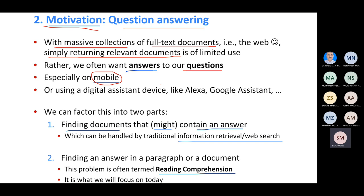This is really useful on mobile phones because you have a small screen and don't have the capacity to read whole texts. That's why we now have digital assistants like Google Assistant, Alexa, and Siri. We can factor the QA system into two parts: first, find the relevant document that might contain the answer — the classical search problem; then find the answer in a paragraph or document. This second task is called reading comprehension.